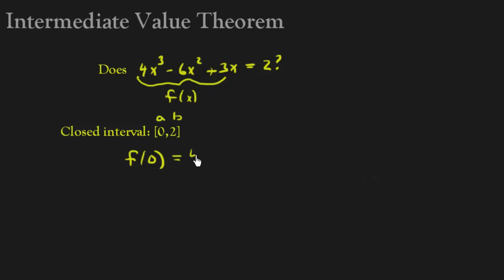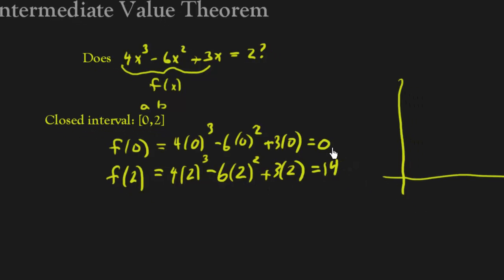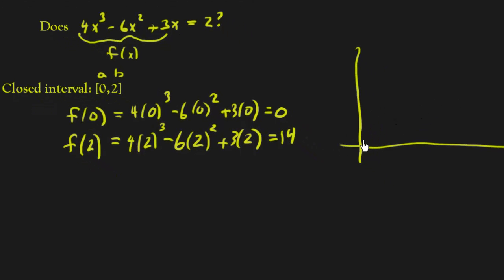So what's f of 0? Well, that's going to be 4 times 0 cubed minus 6 times 0 squared plus 3 times 0, and that's going to equal 0. And then we're going to plug in 2. So that's 4 times 2 cubed minus 6 times 2 squared plus 3 times 2, and that equals 14. So f of 0 is 0, f of 2 is 14, so think of it like this. I have f of x doing something over here. I don't quite know what it looks like, but I do know that when x is 0, I have a y value of 0. And I know that when x is 2, I have a y value of 14,